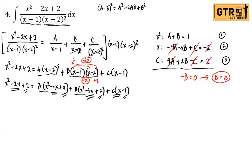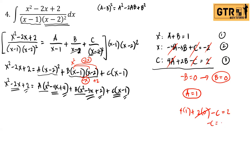Since B equals 0, from equation 1: A equals 1. Substituting A equals 1 and B equals 0 into equation 3: 4(1) plus 2(0) minus C equals 2, so negative C equals negative 2, therefore C equals positive 2.